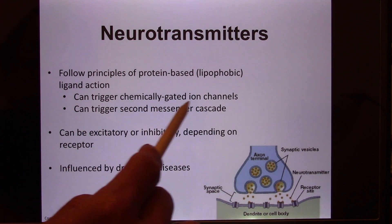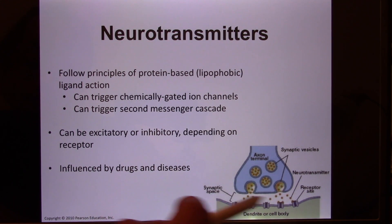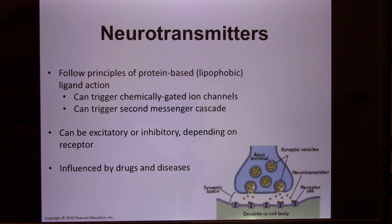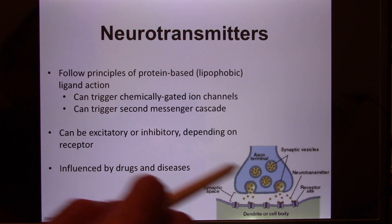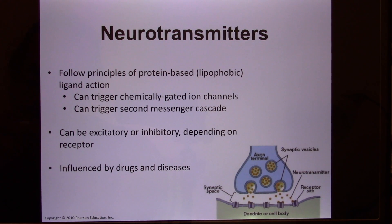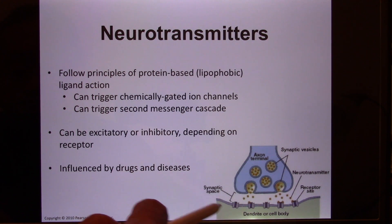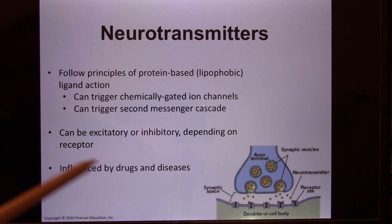A lot of these receptors are chemically gated ion channels — many are ligand-gated sodium channels. When the neurotransmitter is released and binds with the ligand-gated sodium channel, sodium flows in, and these neurons create an excitatory response called an EPSP. Some neurotransmitters trigger the second messenger cascade by binding with a G-protein coupled receptor, activating the G protein, which activates cyclic AMP and kinases inside the cell. They can be excitatory or inhibitory depending on the receptor.